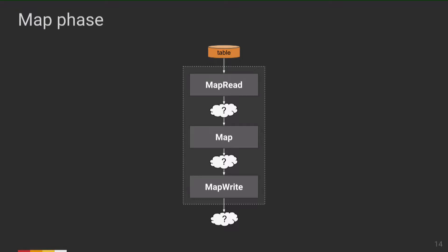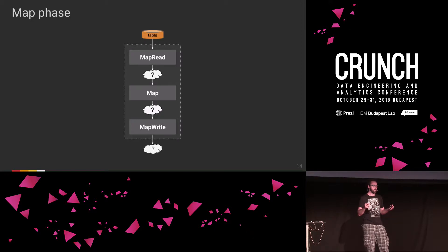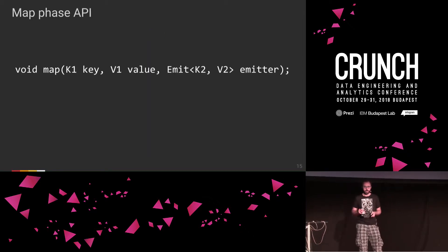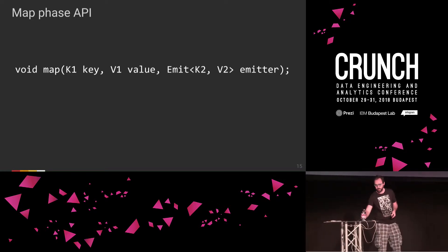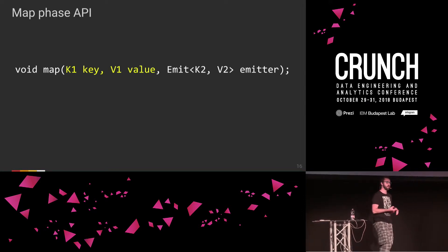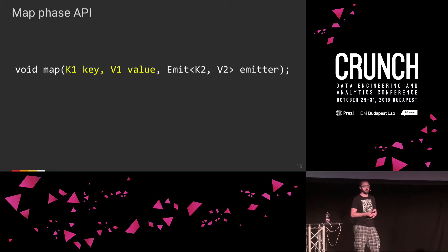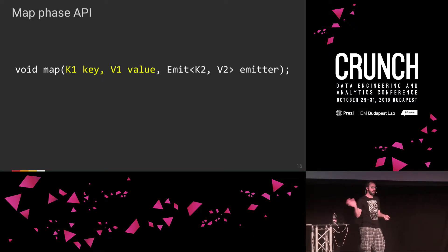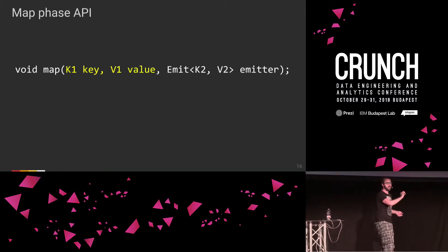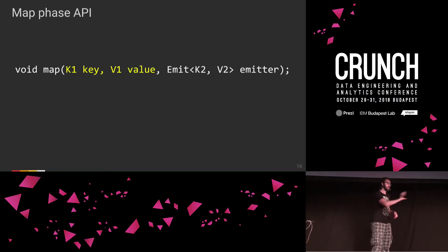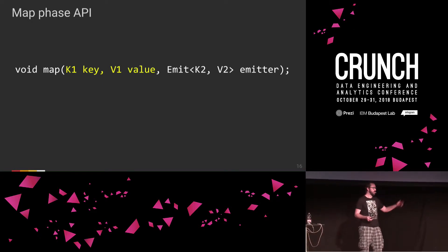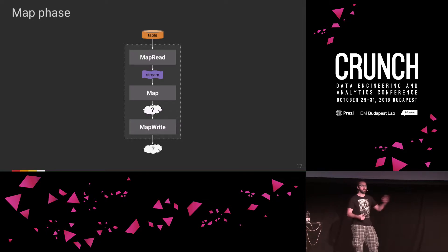To understand what the data looks like after map-read, we can look at the map function signature. A Java map function takes a key and a value as inputs and an emitter object for producing outputs. The map-read phase scans over a static data source and, as it reads records one by one, it calls this map function saying here's a key and a value, go process it. It just continually hands off record after record to be processed. That really feels like a stream — just a sequence of records being processed. So it's safe to say the output of map-read is a stream.